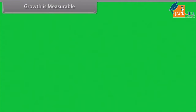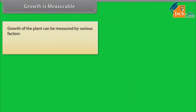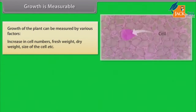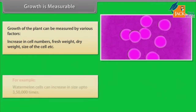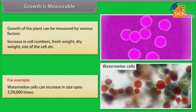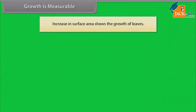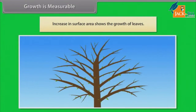Growth is measurable. Growth of the plants can be measured by various factors: increase in cell numbers, fresh weight, dry weight, size of the cell, etc. For example, watermelon cells can increase in size up to 3,50,000 times. Increase in surface area shows the growth of leaves.